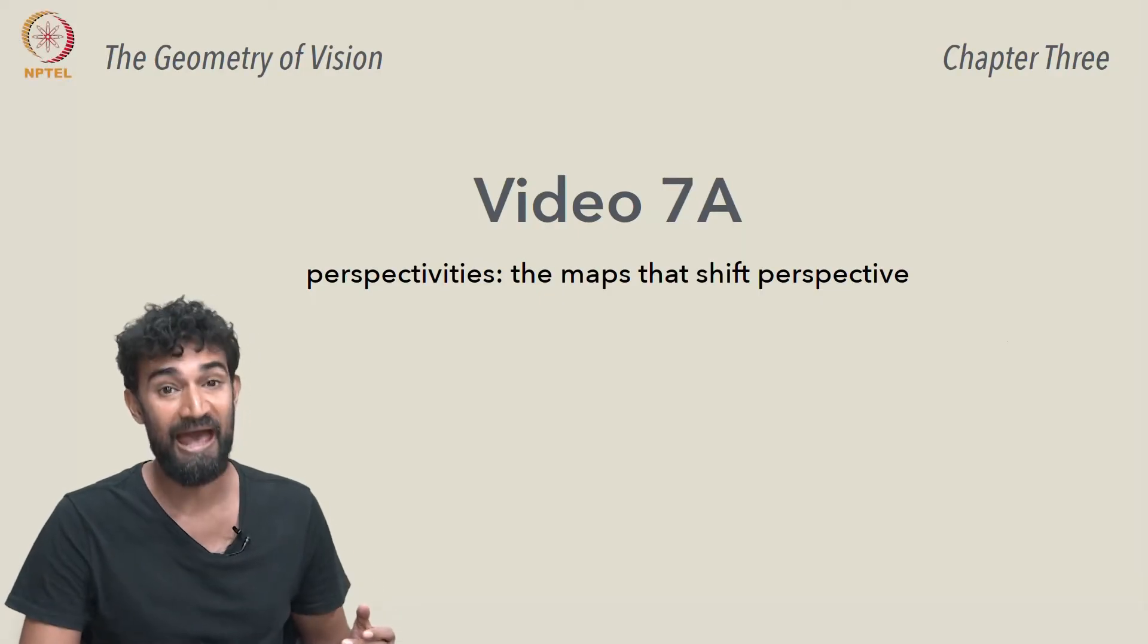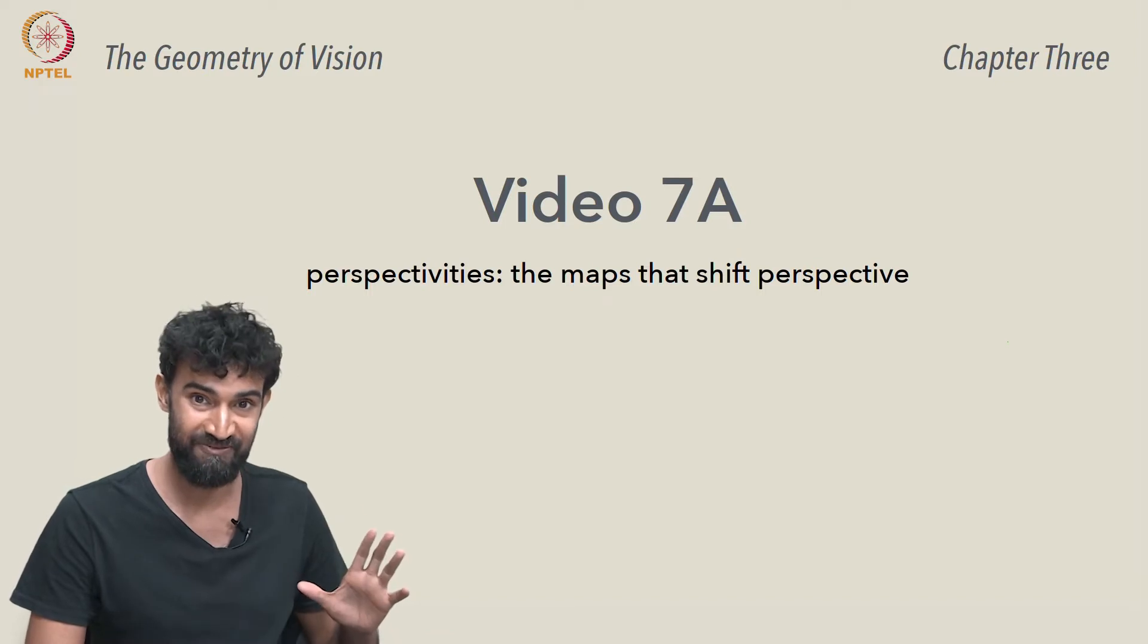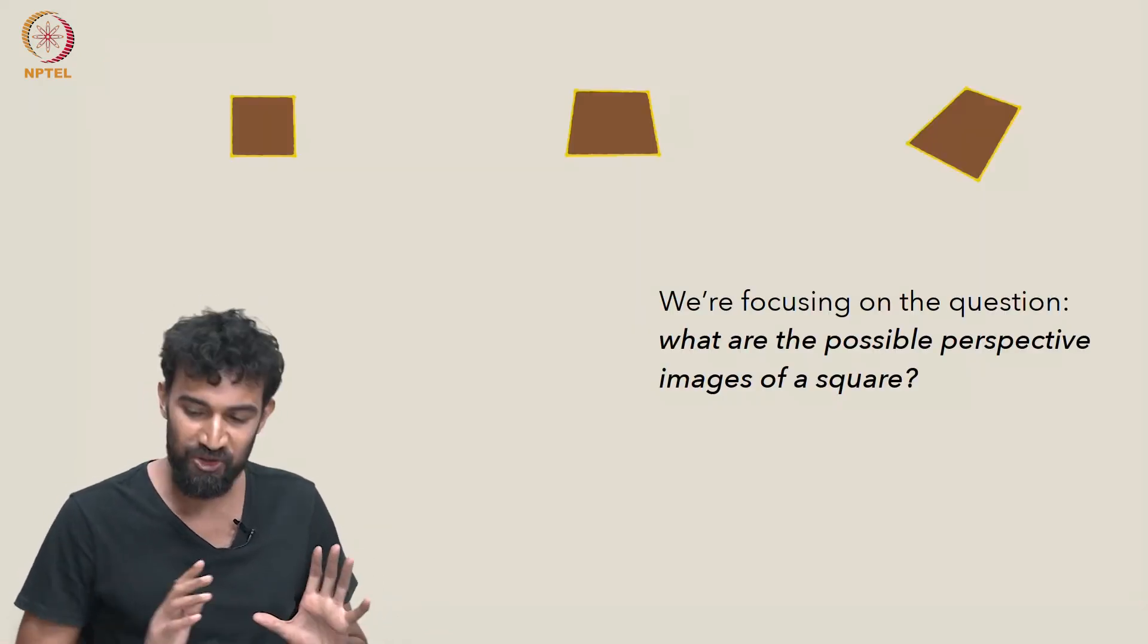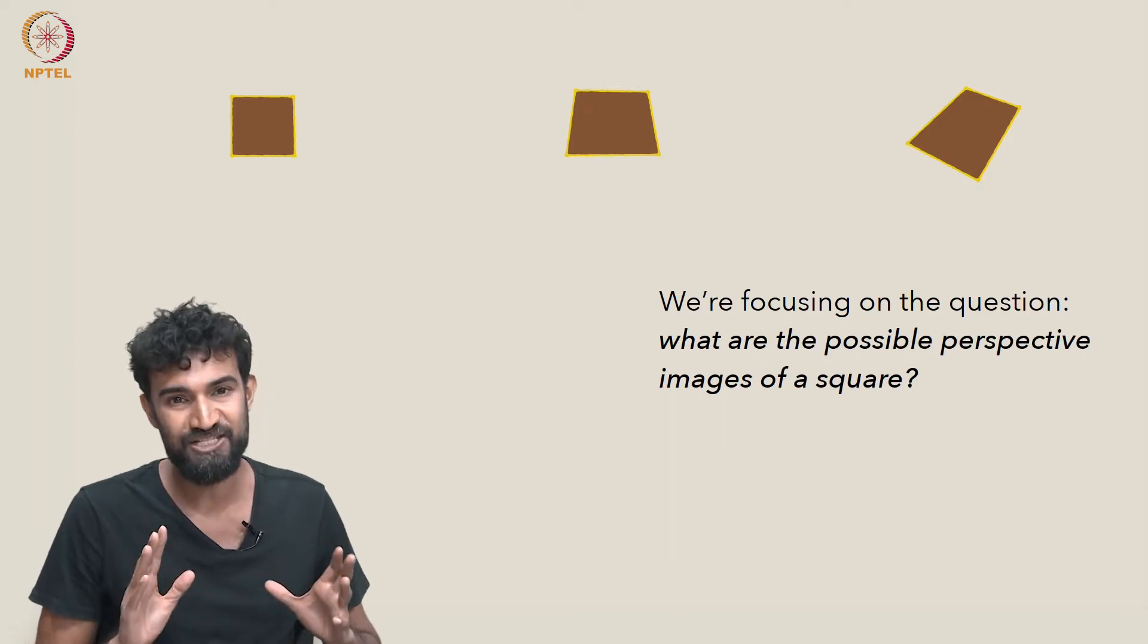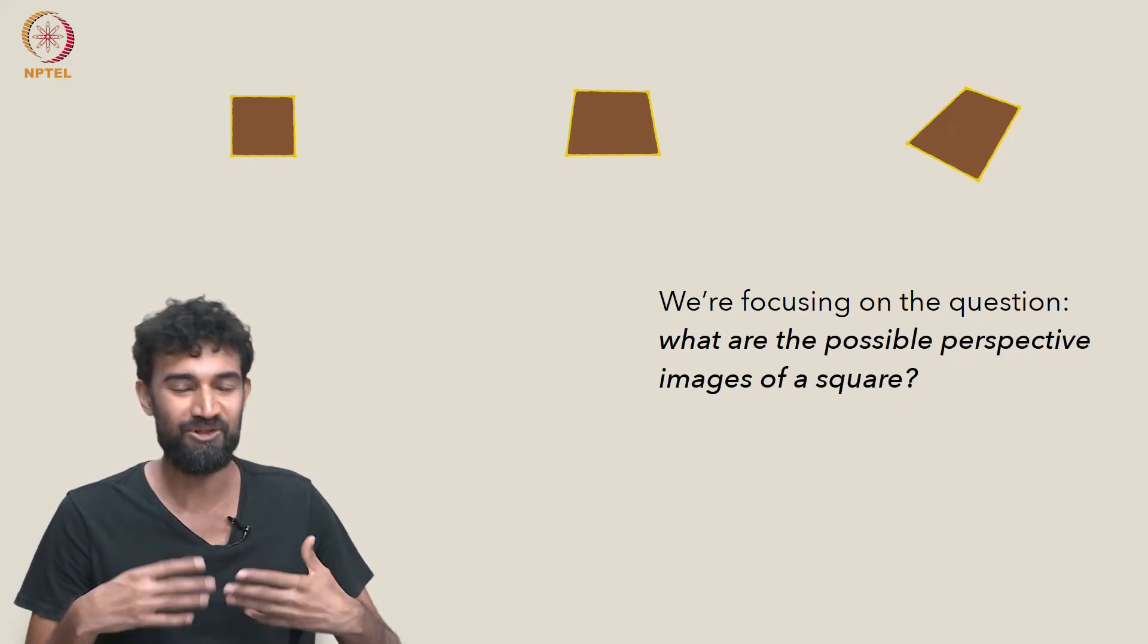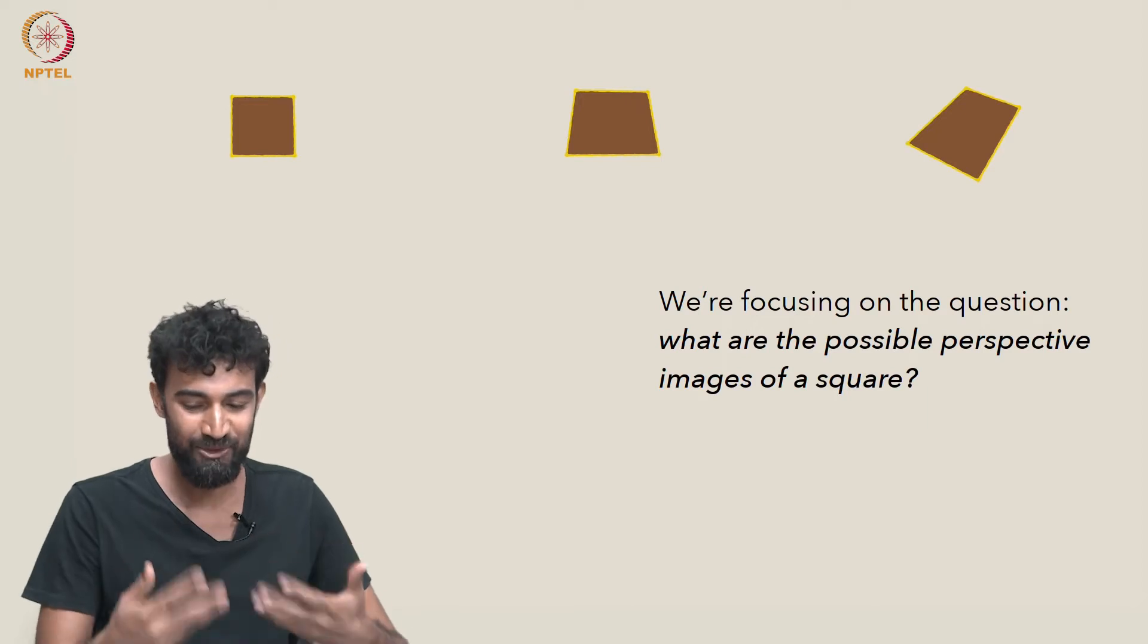Let's take a closer look at perspectivities, which are the maps that shift perspective. This week we're focusing on the question: what are the possible perspective images of a square? What are the shadows of a square, or what are the perspective views of a square? They're really the same thing.